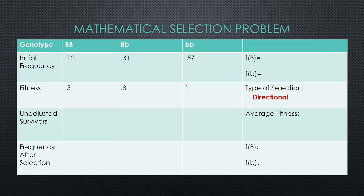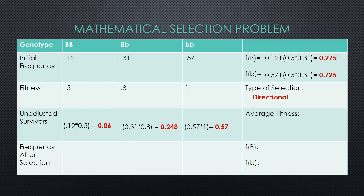First we need to calculate the initial frequency of the big B and little b alleles. For the big B allele, take the initial frequency of the big B big B genotype (0.12) and add it to half of the frequency of the big B little b genotype (0.5 × 0.31), which equals 0.275. Repeat these steps with the little b little b genotype to find the initial frequency of the little b allele. Next, fill out the unadjusted survivors row by multiplying each initial genotypic frequency by its corresponding fitness value. These values — 0.06, 0.248, and 0.57 — can be added together to find the average fitness, which equals 0.878.